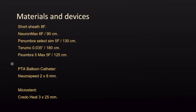Here we have a list of the materials and devices that we used. We used a PTA balloon microcatheter, Neuro Speed 2 by 8 millimeters, and a micro stent Credo Hel 3 by 25 millimeters with an anti-thrombogenic coating.